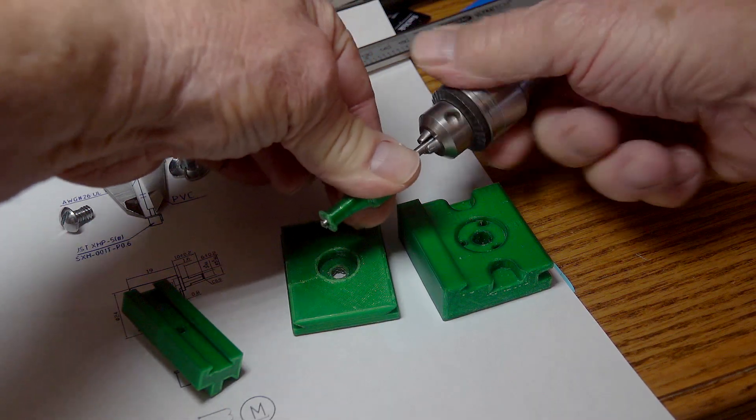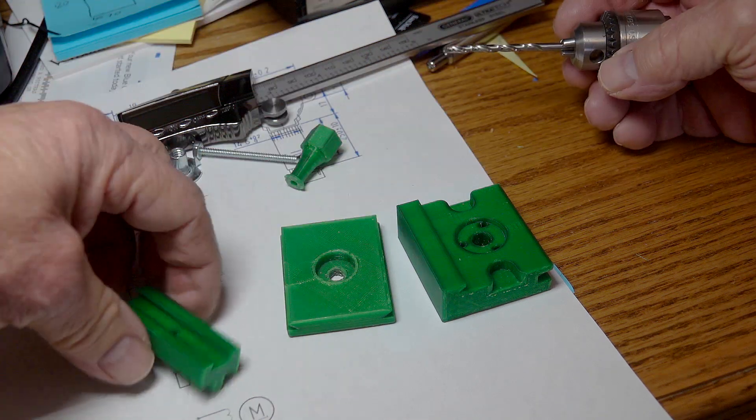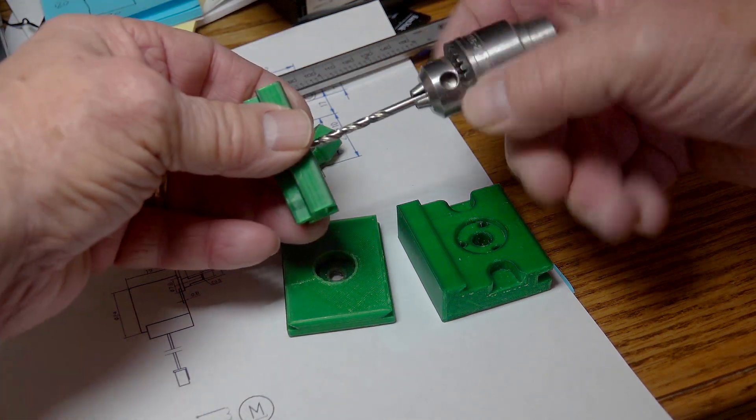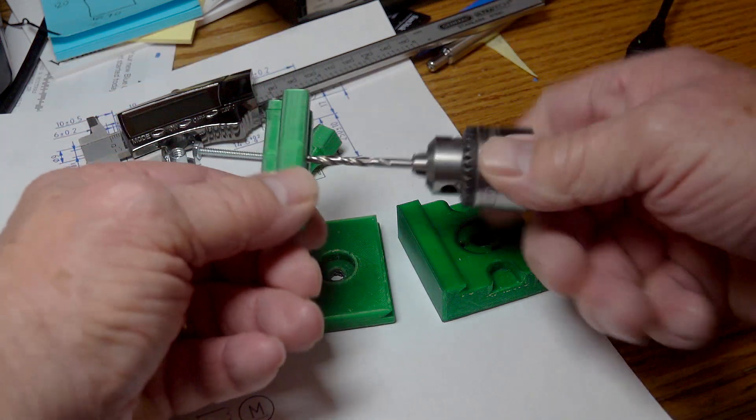Don't clean the hole in the base since it is designed to be tight so when the 6-32 machine screw is screwed in, it will create tight threads that will hold the screw when the knob is rotated.